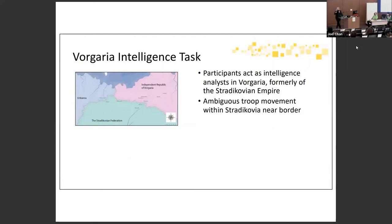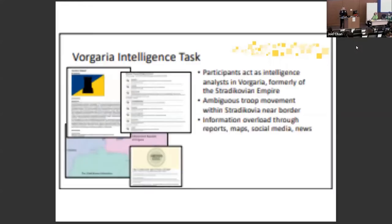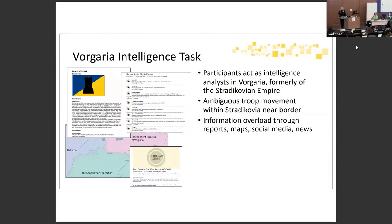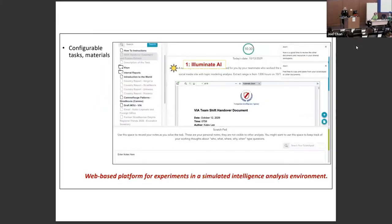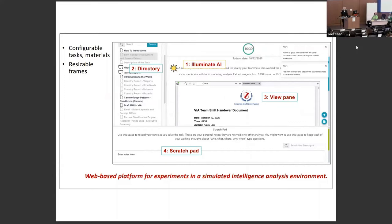We present participants with ambiguous troop movement within the Stratacovian border — there's a troop movement that's been reported and we ask them to evaluate whether the movement is occurring and why it might be happening. We provide information overload through reports, maps, social media, news, and a large number of documents created within this fictional world. Here's an example of our platform — it's configurable for both tasks and materials. The sun icon represents our AI, which we call Illuminate, used to provide document summaries and topic modeling.